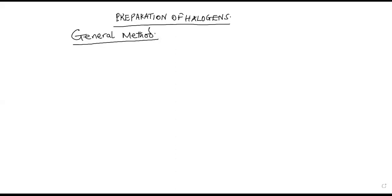Welcome to this lesson. We are still looking at halogens, group seven elements. Last time we covered the trends of the physical properties — the variation in atomic and physical properties of these elements. But today, in this lesson, I want us to cover the methods of preparation of these halogens.